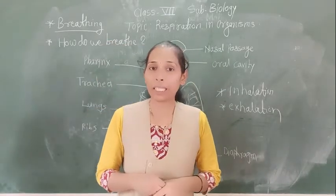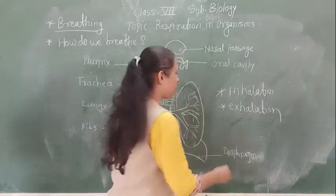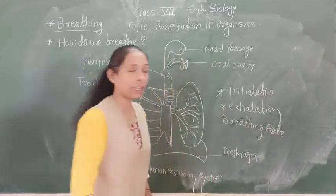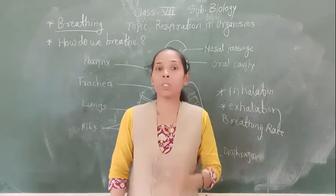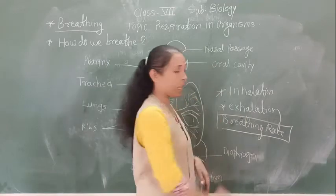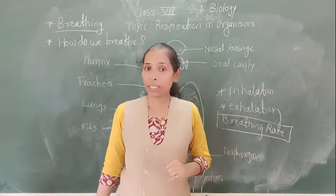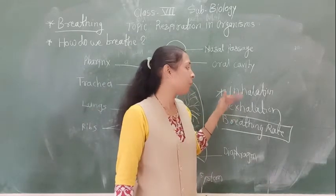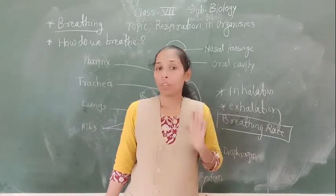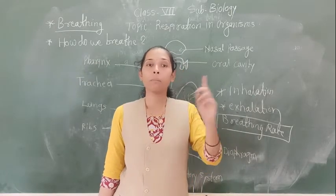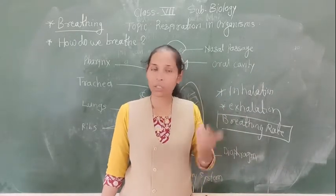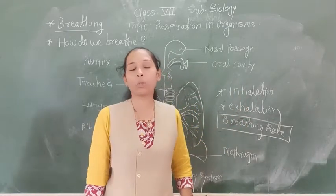The number of times we breathe per minute is called the breathing rate. Breathing rate is the number of times we breathe during one minute. One inhalation followed by one exhalation forms one breath. In this way you can also find out your breathing rate. Normally an average adult person has 15 to 18 breaths per minute.